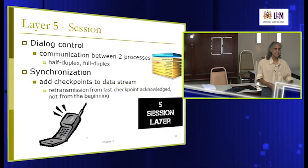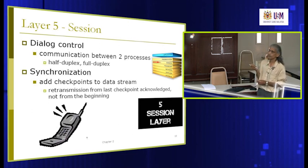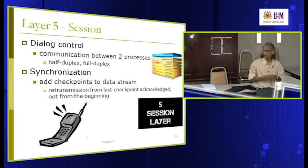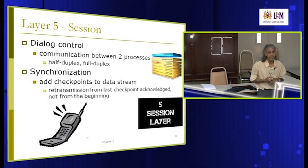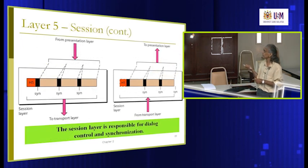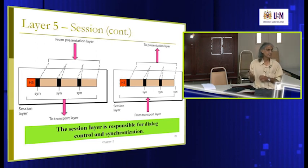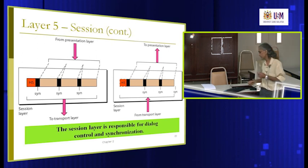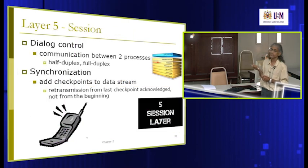The next layer up is the session layer. The session layer decides how two applications will communicate with one another — either both at the same time, one after another, or only one way. It determines whether communication is half duplex or full duplex. For example, one process may want to send data to another — can it also receive at the same time, or only one at a time? The session layer makes that decision beforehand.